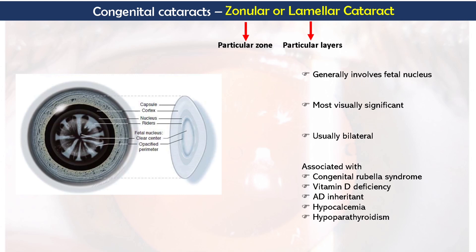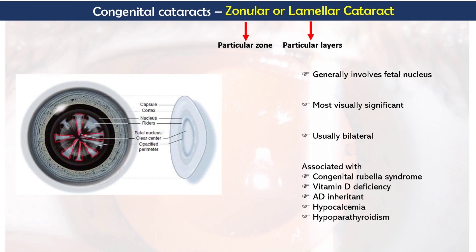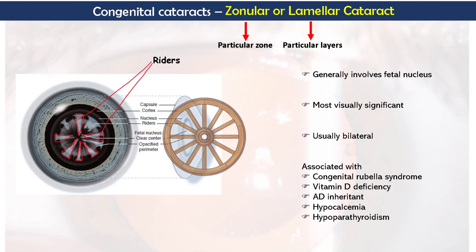Clinically, zonular cataract presents as a central opacity with a clear zone internally and externally around it. Because it involves the fetal nucleus, it leaves the embryonic nucleus internally and the cortex externally around it, both transparent. A special feature is that spoke-like linear opacities extend from the central opaque zone toward the equator; these are known as riders and give the appearance of a cartwheel.